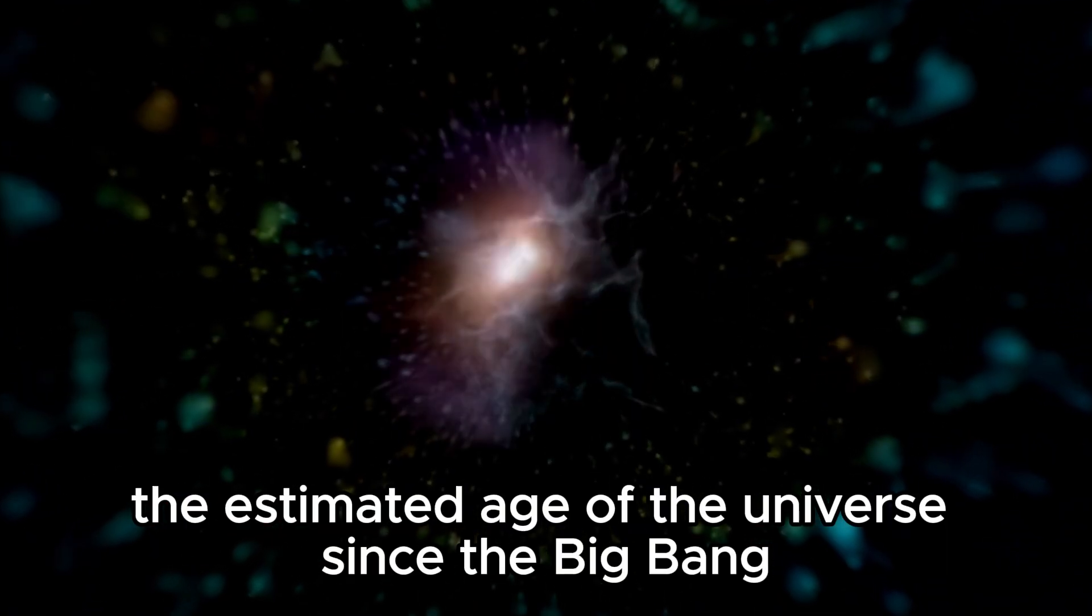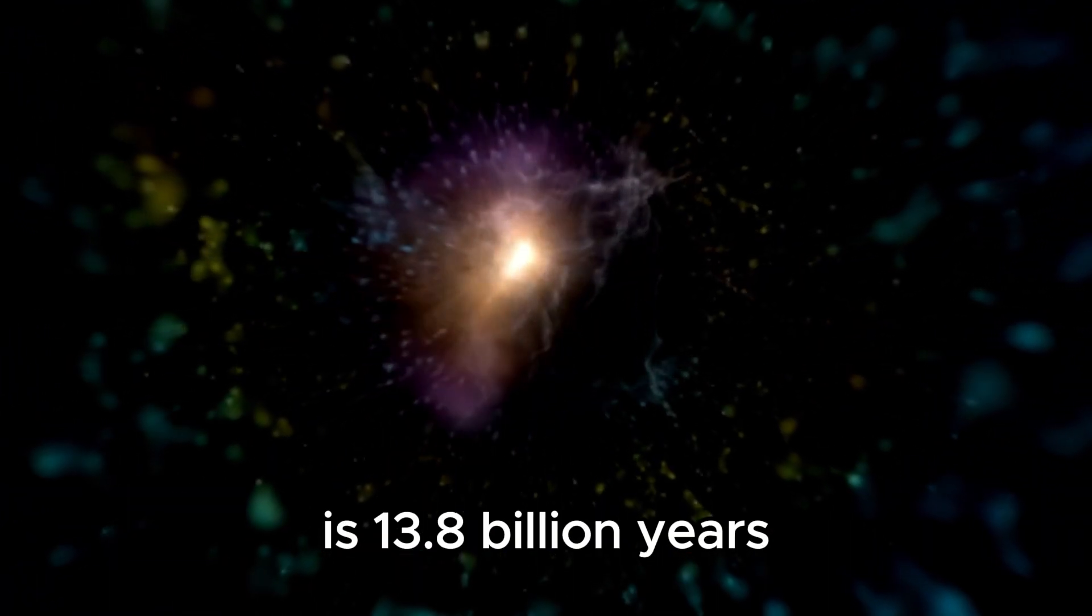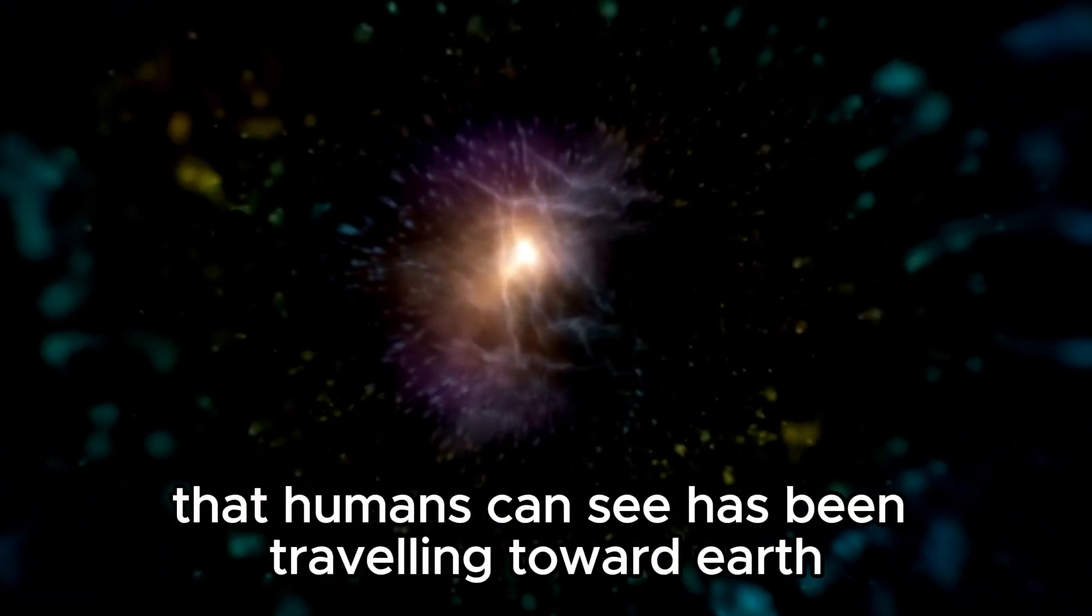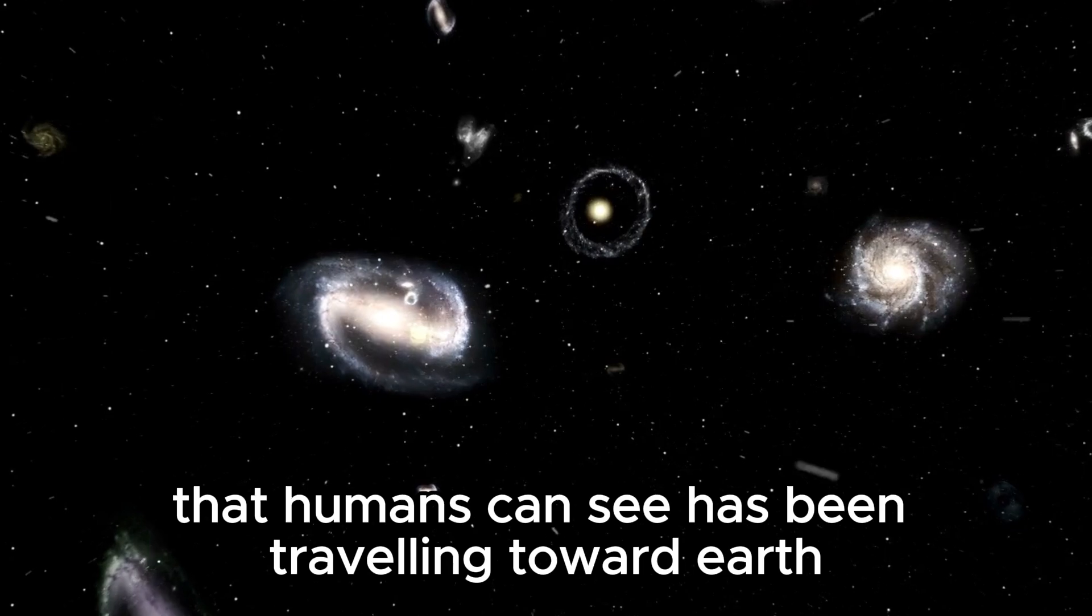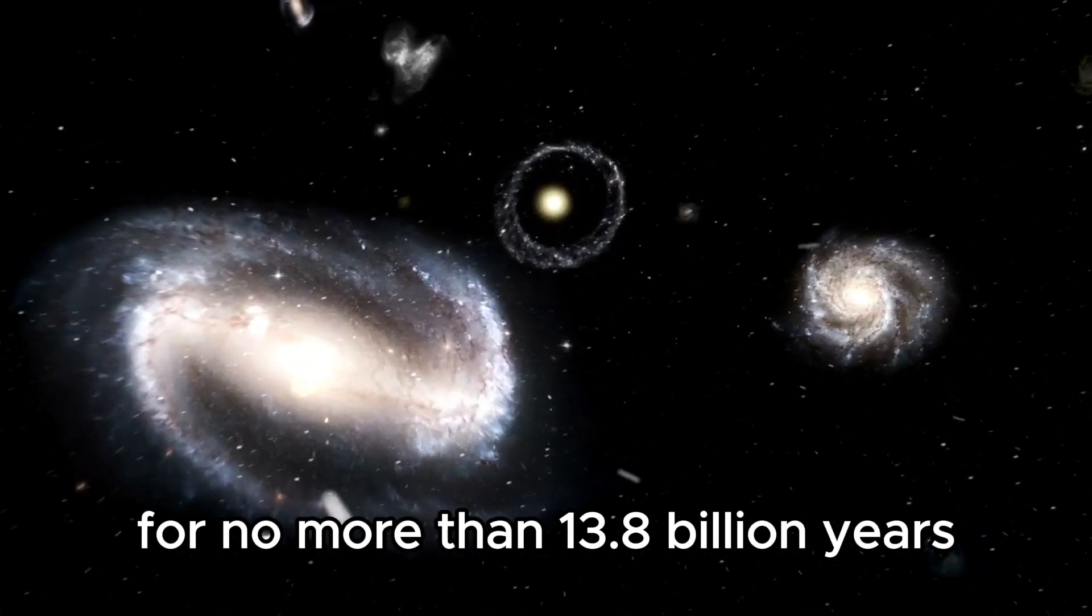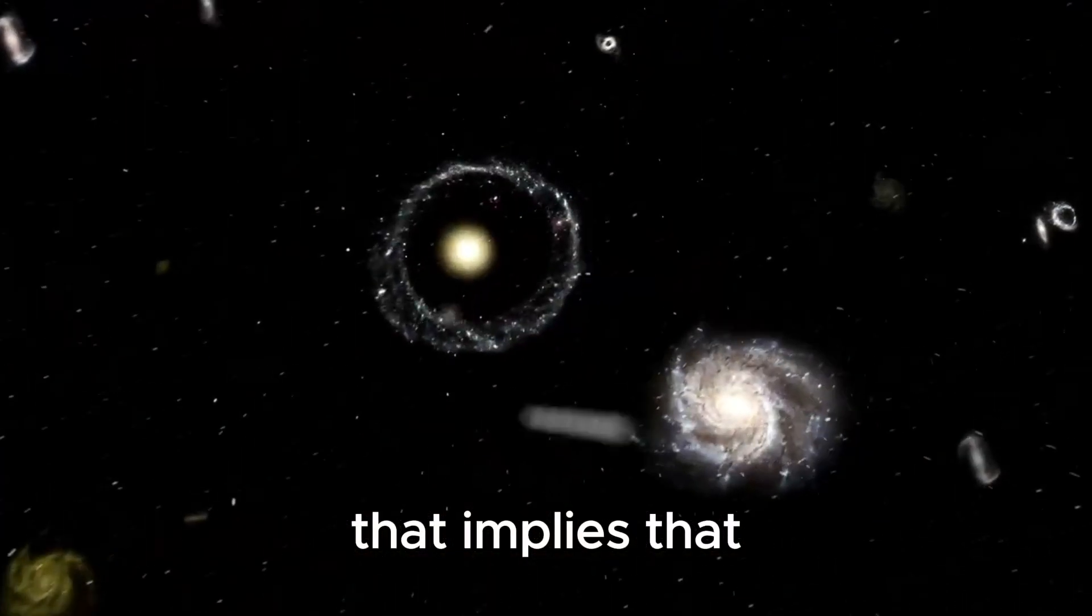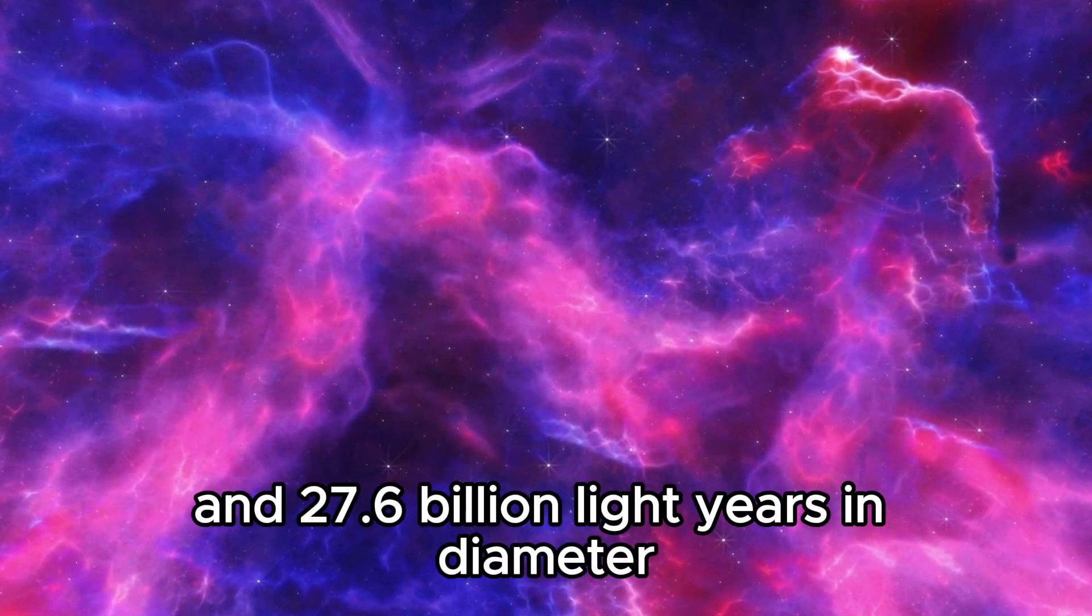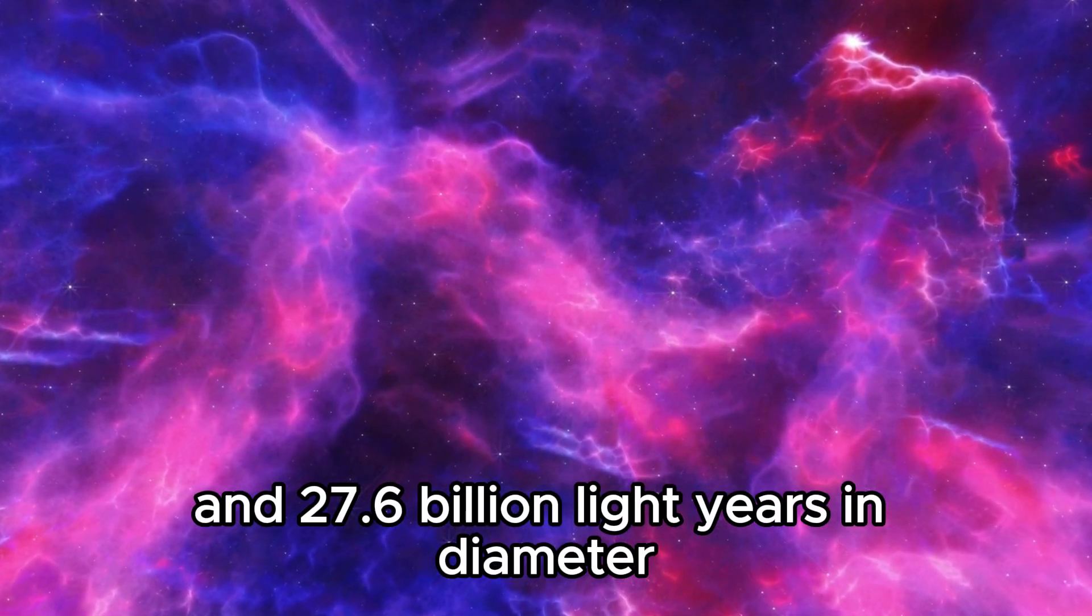The estimated age of the universe since the Big Bang is 13.8 billion years. This means that light emitted by objects in space that humans can see has been traveling toward Earth for no more than 13.8 billion years. That implies that the observable universe is 13.8 billion light-years in every direction from Earth and 27.6 billion light-years in diameter.